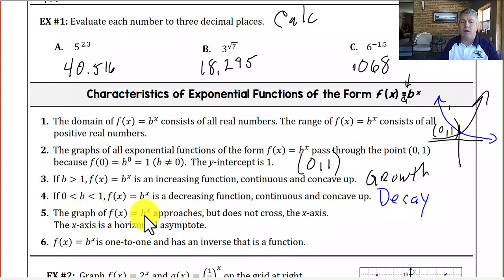Again, the graph of y equals b to the x approaches, but does not cross the x-axis. The x-axis is a horizontal asymptote, which would be y equals 0. And b to the x is one-to-one and has an inverse that is a function, and we will learn later on that those inverse functions are logarithmic functions.